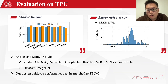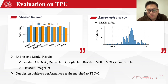Besides synthetic convolution layers, we also compare simulated and measured performance on real-world end-to-end CNN models. We evaluate seven popular neural networks covering tasks in different domains and models of different sizes. We report inference performance with the ImageNet dataset. The left figure shows that our design achieves performance results matching TPUv2, and the right figure shows the error distribution across all layers. The MAE is only 5.8%, which further validates our algorithm and simulator.